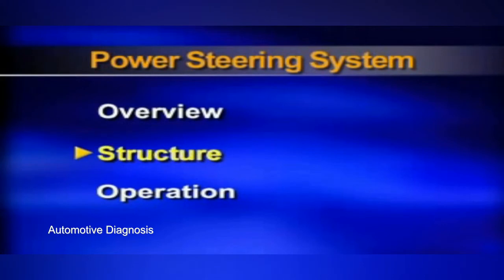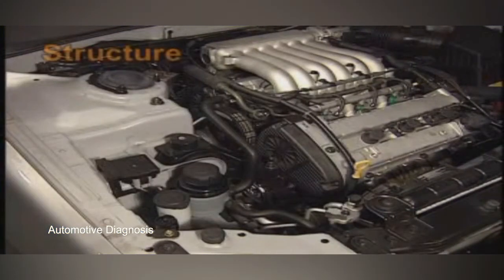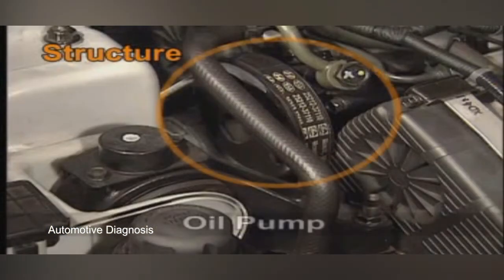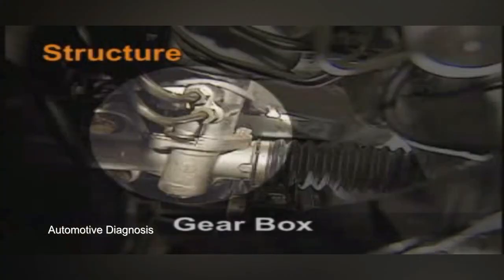Now, let's take a look at the structure of power steering. A power steering system consists of an oil pump, oil reservoir, hose and tube, and gearbox. The components of the gearbox are rotary valve, rack bar, cylinder tube, B-tube, and tie rod.